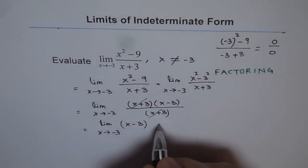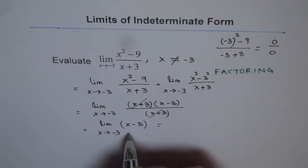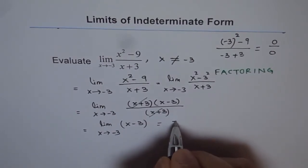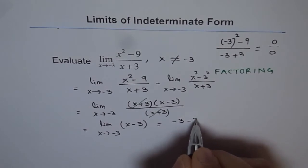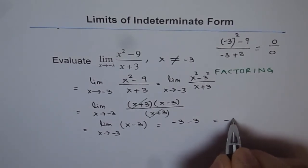And now by applying the laws of limits, we can find the limit. We can substitute minus 3 for x, and if we do that, we get minus 3 minus 3, that is minus 6.